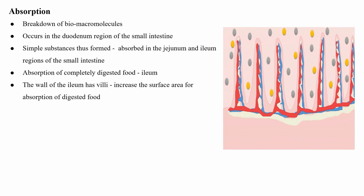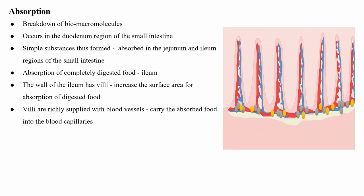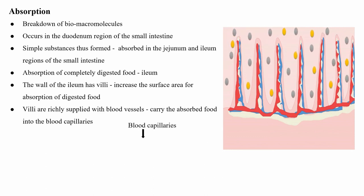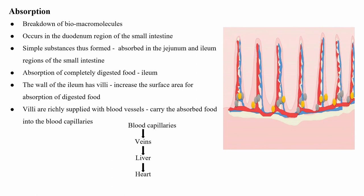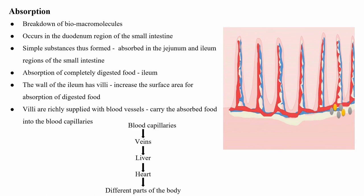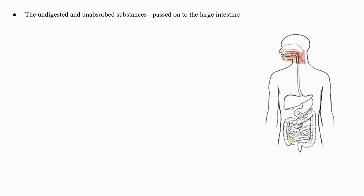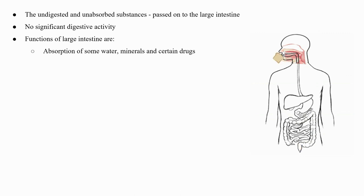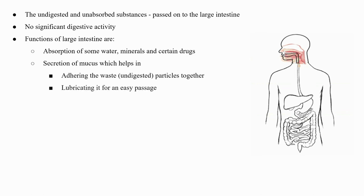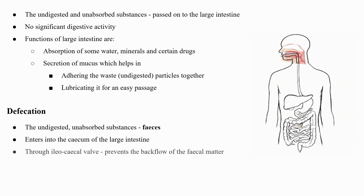Absorption of completely digested food takes place in the ileum. The wall of the ileum has finger-like projections called villi that increase the surface area for absorption of digested food. The villi are richly supplied with blood vessels to carry absorbed food into the blood capillaries; from there, absorbed materials are transported by veins to the liver and then to the heart for distribution to different parts of the body. The undigested and unabsorbed substances are passed on to the large intestine, where no significant digestive activity occurs. Functions of the large intestine include absorption of some water, minerals, and certain drugs, and secretion of mucus to help in adhering waste particles together and lubricating it for easy passage.